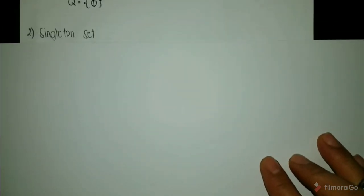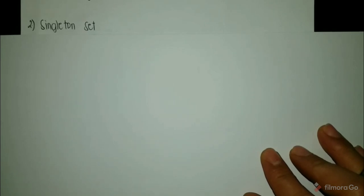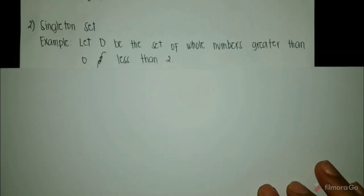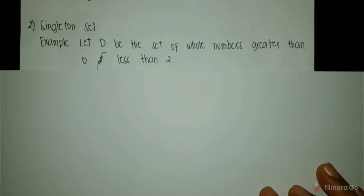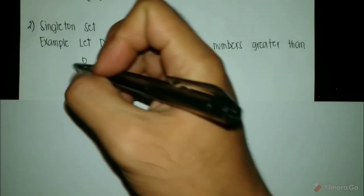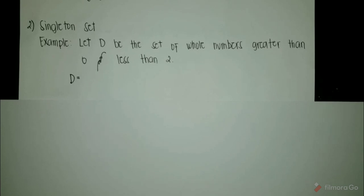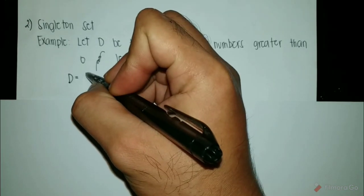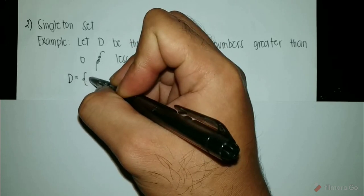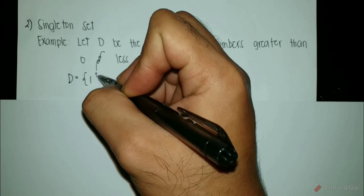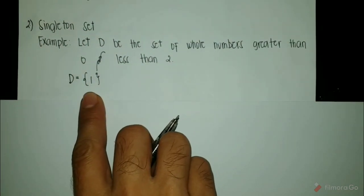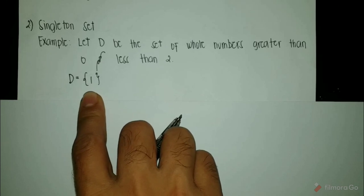Next will be the singleton set. A singleton set is a set which contains only one element. For example, let D be the set of whole numbers greater than 0 and less than 2. The only whole number greater than 0 and less than 2 is 1. Since we only have one element on this set, therefore this is a singleton set.